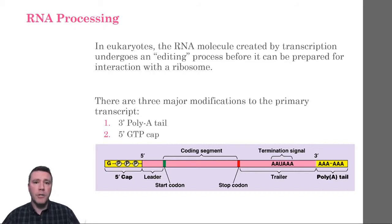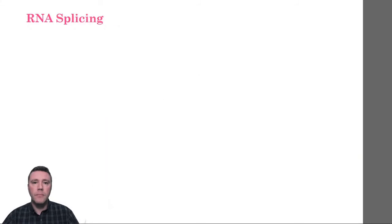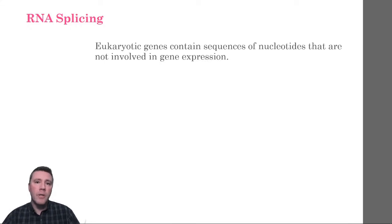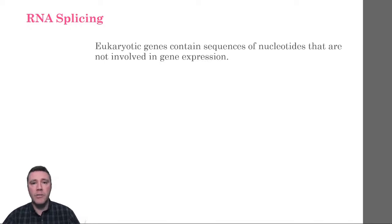The third modification to the primary transcript involves a process called RNA splicing. In RNA splicing, large portions of the primary transcript that are not used to code for specific amino acids in translation are removed. The length of an average primary transcript in humans is nearly 30,000 nucleotides long; however, the average mature messenger RNA used in translation is only 1,200 nucleotides. We can therefore infer that most eukaryotic genes have long stretches of nucleotides that are non-coding and are therefore not translated.